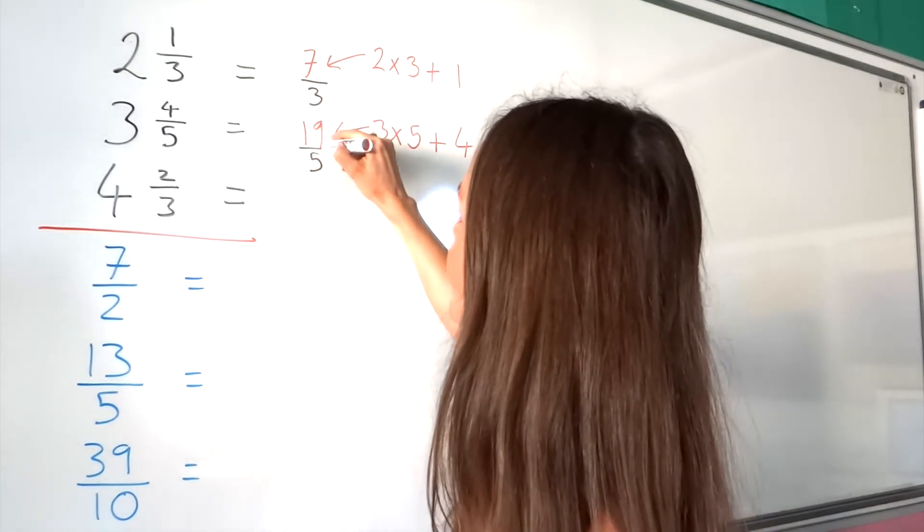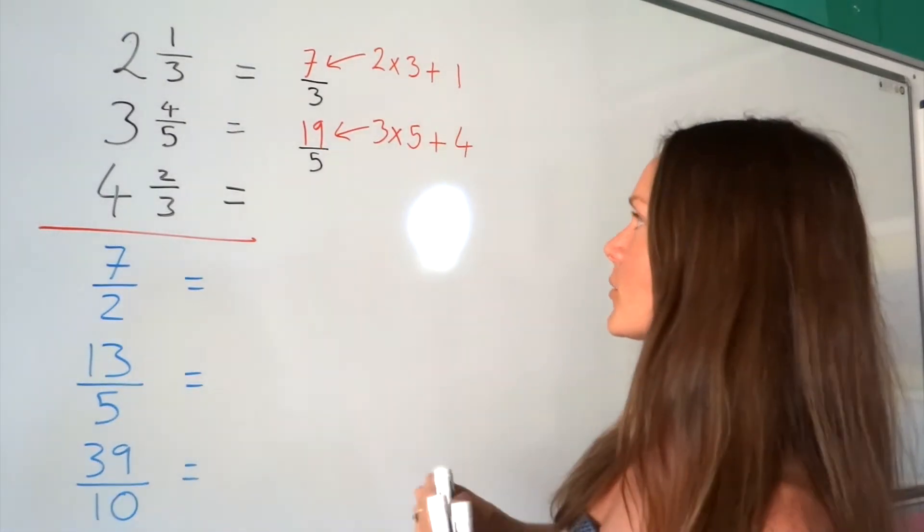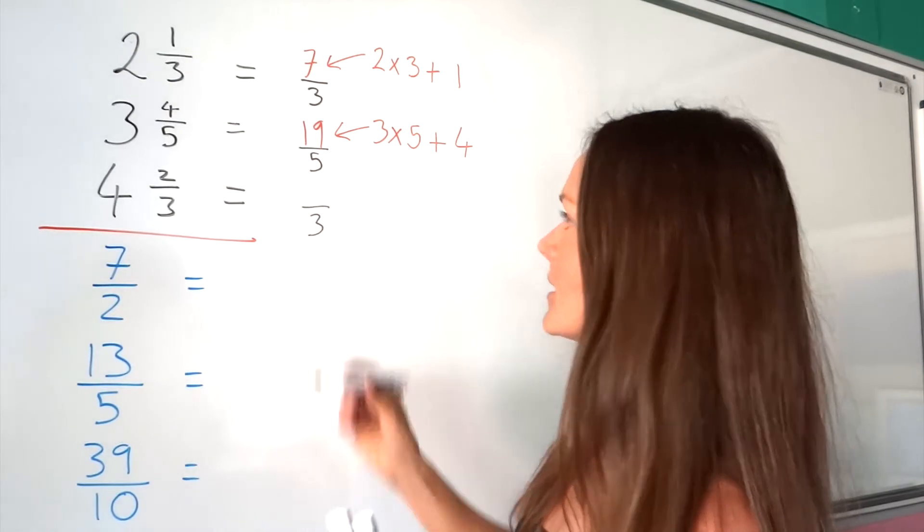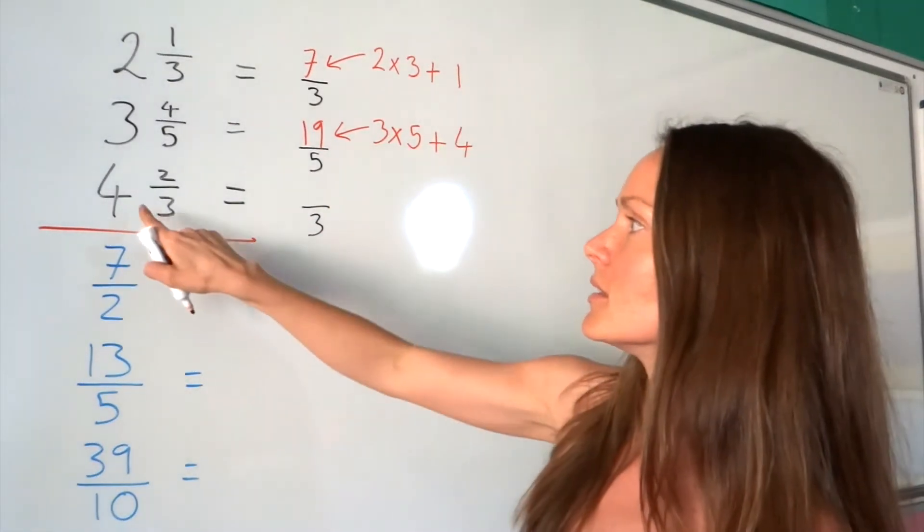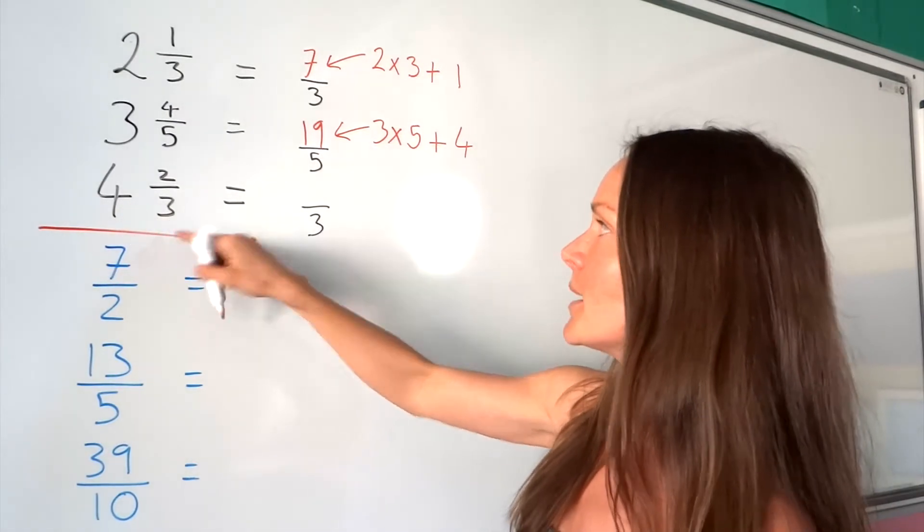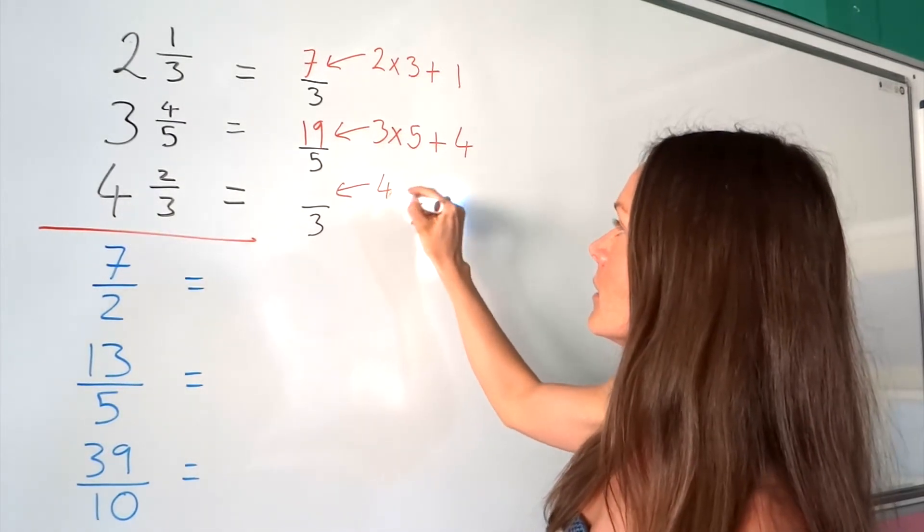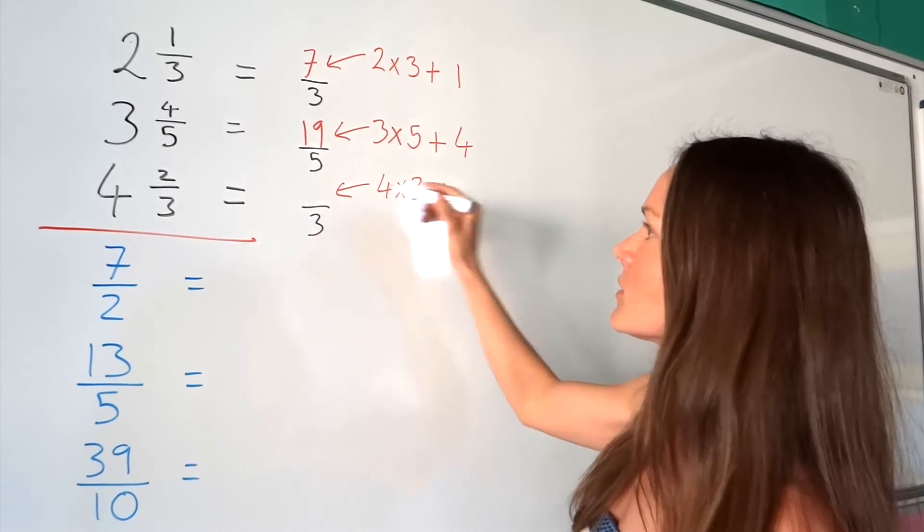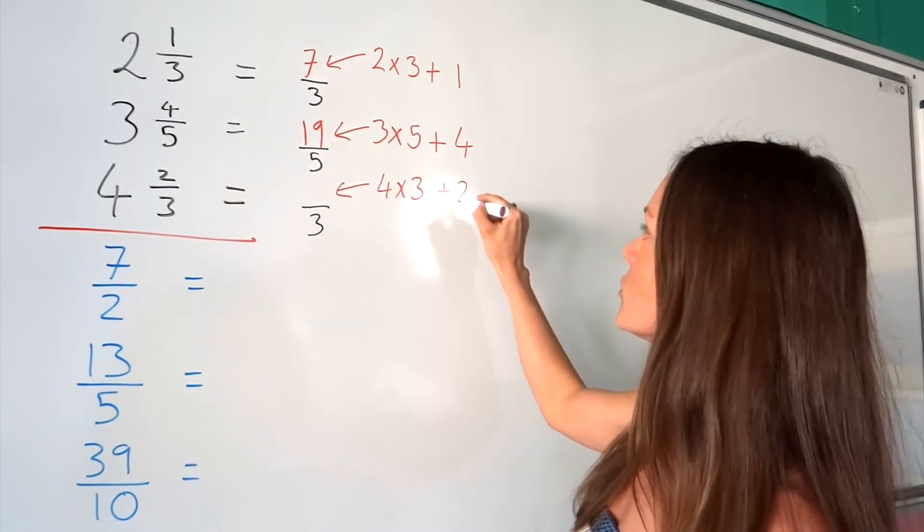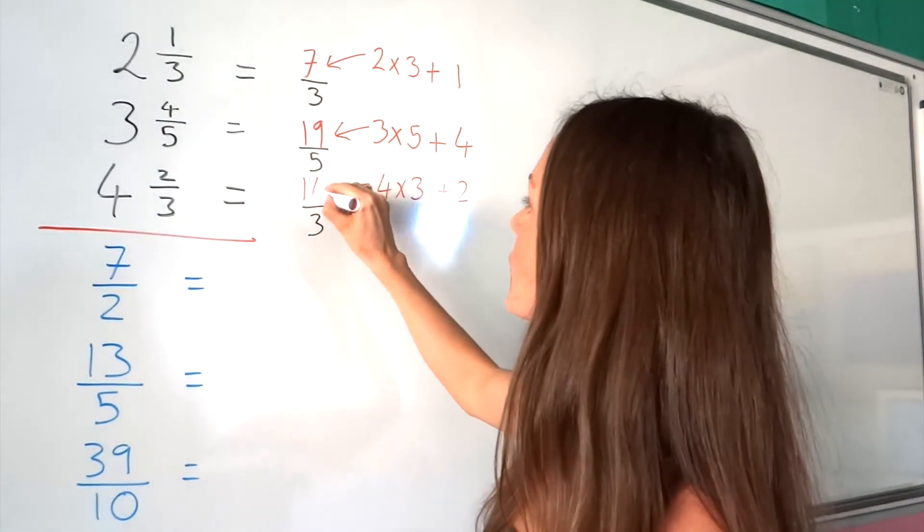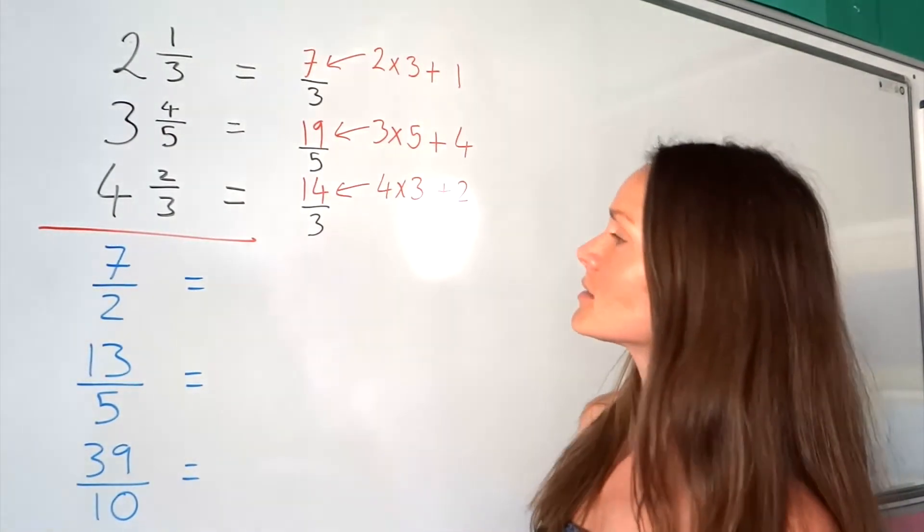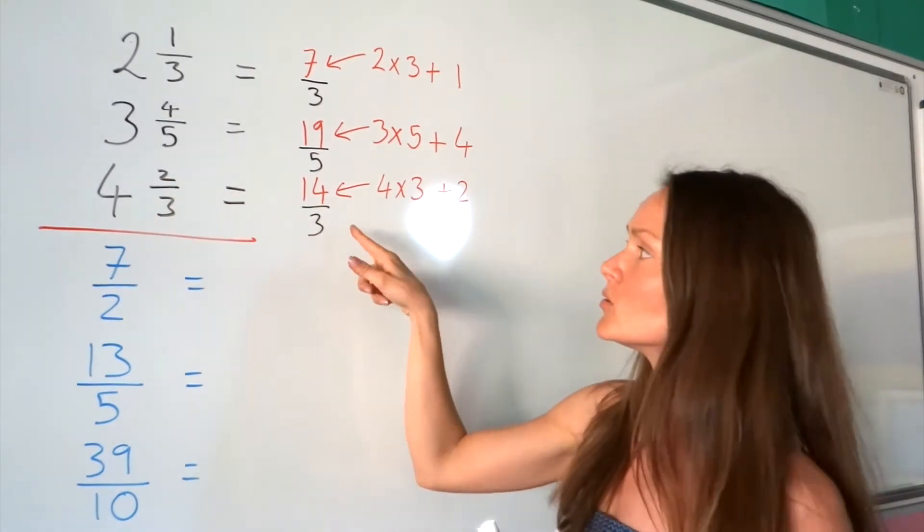For the last one, the denominator stays the same. You multiply the whole number 4 by the denominator 3, then add the numerator 2. So 4 times 3 is 12, plus 2 gives me 14. So 4 2/3 equals 14/3. That's mixed numbers into improper fractions. Now let's go the other way around.